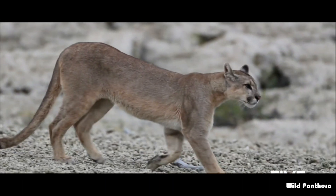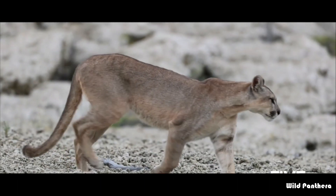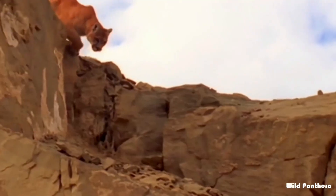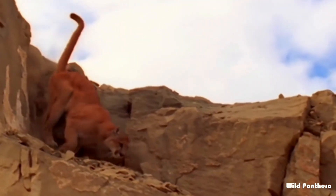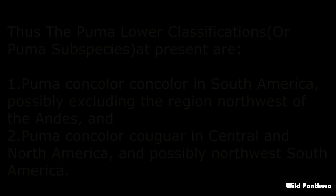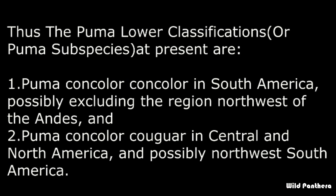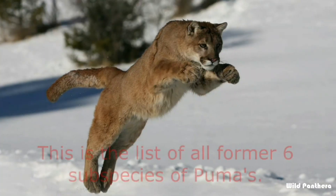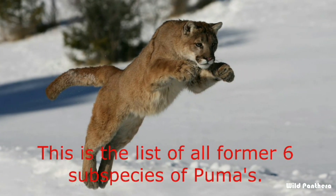Linnaeus was the first scientist who described the puma. 32 puma zoological specimens were described and proposed as subspecies until the late 1980s, but in 2017 the Cat Classification Task Force of the Cat Specialist Group recognizes only two subspecies: Puma concolor concolor in South America, and Puma concolor couguar in Central and North America.